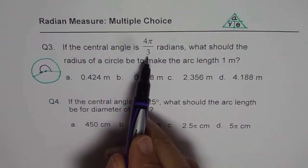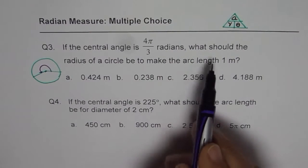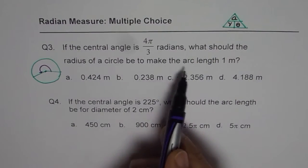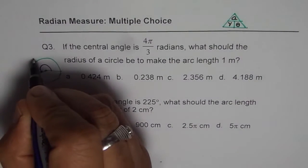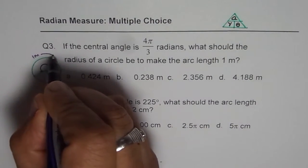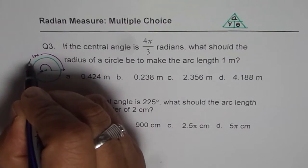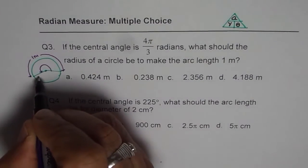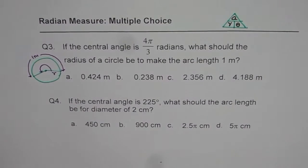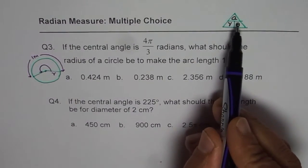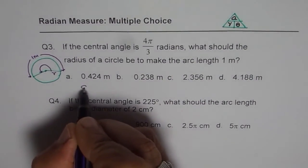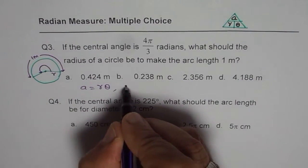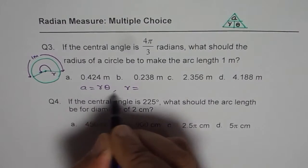If the central angle is 4 pi by 3 radians, what should the radius of the circle be to make arc length of 1 meter? So we are given this length of the arc as 1 meter, and we need to find the radius. So we will apply the formula, a equals to r theta, so we have a equals to r theta, or we can say what is radius? Radius is a divided by theta.